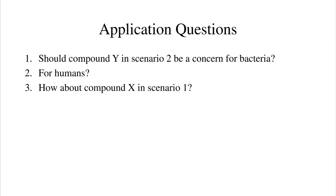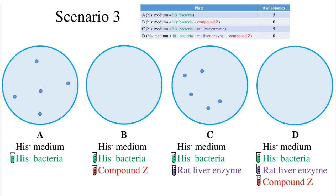In our final scenario: plate A has 5 colonies, plate B has 0 colonies, plate C has 5 colonies, and plate D has 0 colonies. These results indicate that the compound decreases the rate of spontaneous reverse mutation, both in its parent and metabolite form — perhaps it helps with DNA repair mechanisms. This compound may be hypothetical.